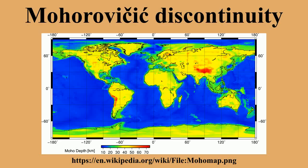The Moho lies almost entirely within the lithosphere; only beneath mid-ocean ridges does it define the lithosphere-asthenosphere boundary.